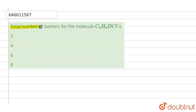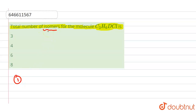The question is: find the total number of isomers for the molecule C₃H₆DCl. We have three carbons, and we need to draw all possible isomers — these can be structural or optical isomers.